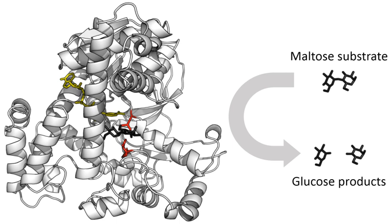Examples of such enzymes are triose phosphate isomerase, carbonic anhydrase, acetylcholinesterase, catalase, fumarase, beta-lactamase, and superoxide dismutase. The turnover of such enzymes can reach several million reactions per second. But most enzymes are far from perfect.